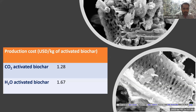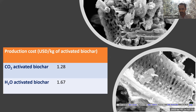We also carried out a cost analysis of the optimized carbons. The CO₂-activated carbon cost approximately 1.28 USD per kg of biochar, while H₂O-activated carbon costs 1.67 USD per kg. The upper sample shown is the H₂O-activated biochar and the lower one is the CO₂-activated biochar.